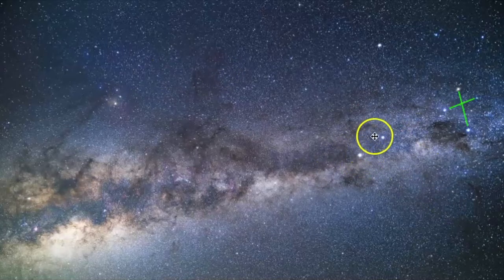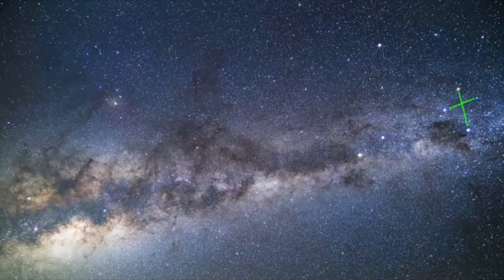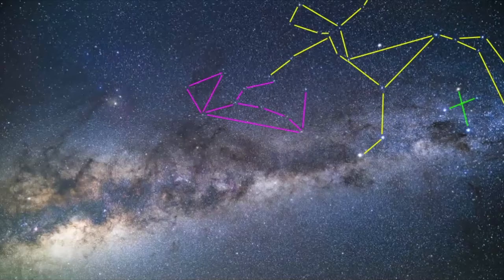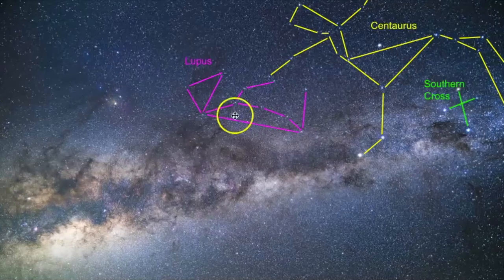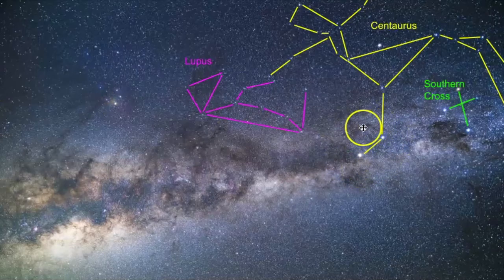This one is Alpha Centauri and this one is Beta Centauri. Pointing out some of the constellations here — and this is only a few — we have Centaurus, the Southern Cross, and Lupus. The two brightest stars in Centaurus are Alpha Centauri and Beta Centauri. Let's get a closer look at these stars.